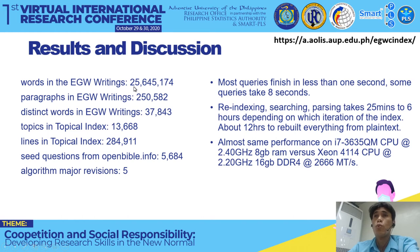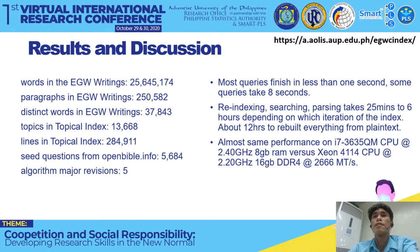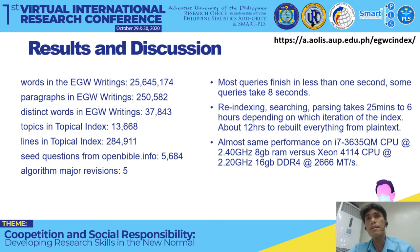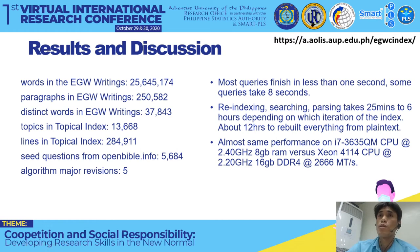The parsing results were amazing: EG White writings had 25 million words, 250,000 paragraphs, and 37,000 distinct words. Furthermore, the topical index had about 13,000 topics, and under those topics there are 284,000 lines corresponding to references, sub-topics, or sub-entries.